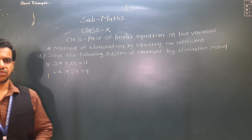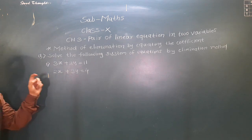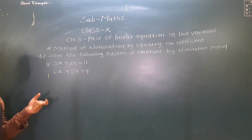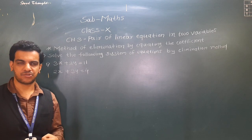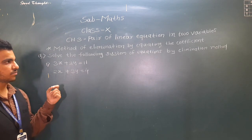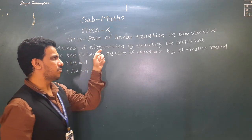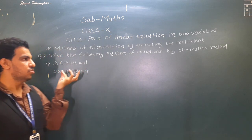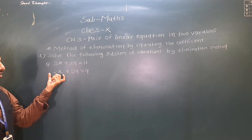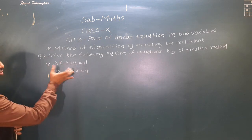Hello students, today we are going to learn another method to solve a system of equations, or pair of linear equations in two variables. Already we learnt graphical method and substitution method. The third method is the elimination method by equating the coefficients. We will start directly from an example — I will explain this method by solving an example.